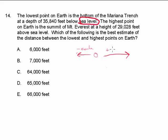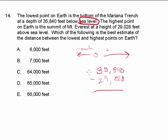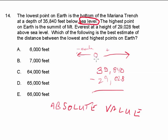On the positive side of the number line we have 29,028 feet. If you simply subtract these numbers you will get an incorrect answer, because we are dealing with absolute value. Absolute value is the number of units from zero to that number — in this case 35,840 feet on one side and 29,028 feet on the other. We actually have to add those numbers together, not subtract them.